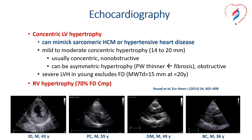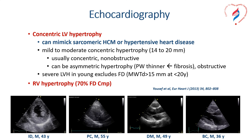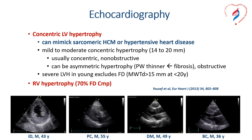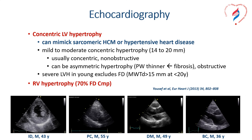It can also be of asymmetric nature when the posterior wall becomes thinner due to fibrosis. If severe LV hypertrophy is found in the young — meaning a maximal wall thickness of more than 15 millimeters during adolescence — this usually excludes Fabry disease, as this is a disease that begins to affect the tissues later in life. In more than two thirds of cases, Fabry cardiomyopathy is a biventricular disease, adding right ventricular hypertrophy to the left.